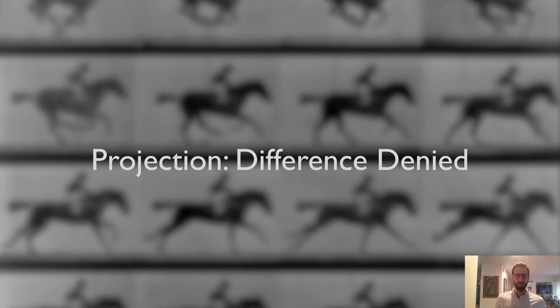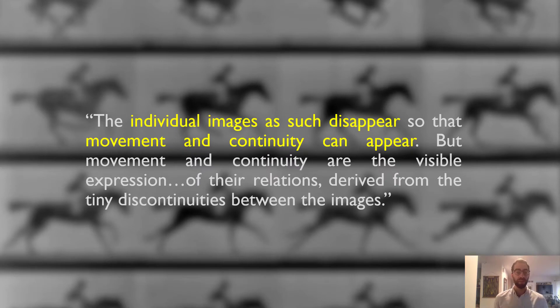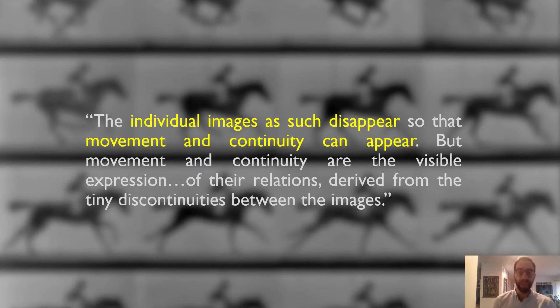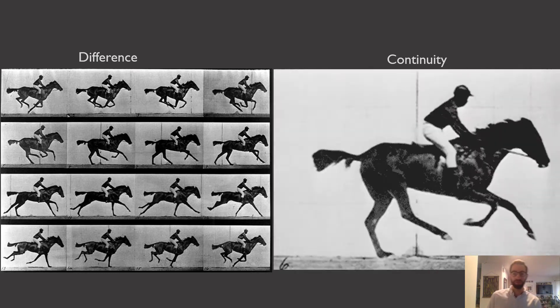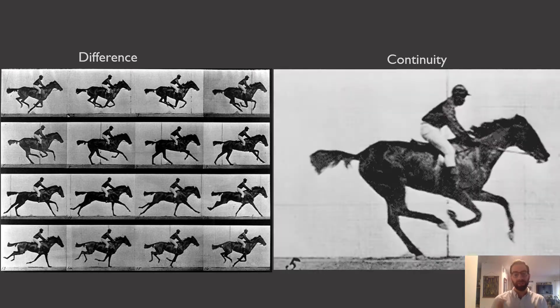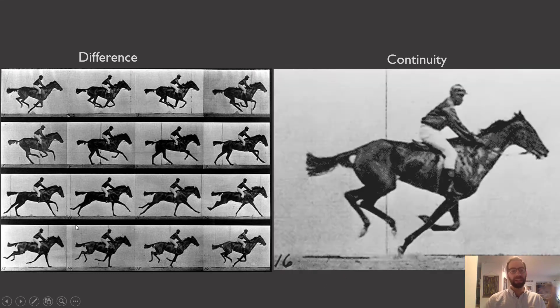Let's see how that argument works in the second and third parts and offer some questions for your essays, to make this essay more palpable and more related to movies. 'Projection Difference Denied' is all about stitching together movement from individual frames running at 24 frames per second. He says the individual images disappear so that movement and continuity can appear, and movement and continuity are the visible expression of their relations derived from the tiny discontinuities between the images. He's talking about the basic mechanical fact of how the illusion of movement is produced.